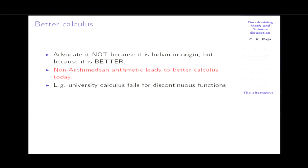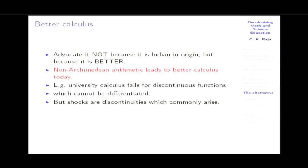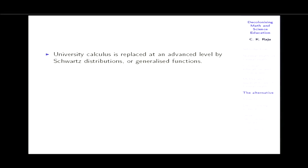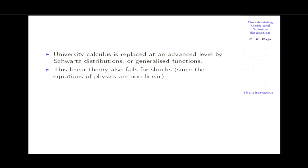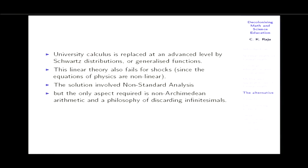Non-Archimedean arithmetic leads to better calculus today. University calculus fails for discontinuous functions, which cannot be differentiated, yet shocks and discontinuities arise in physics. You need to make sense of partial differential equations of physics in the presence of discontinuity. You can replace it by Schwartz distributions, but Schwartz theory is linear, and the equations are non-linear — so you have to multiply distributions, and Schwartz proved an impossibility theorem that this cannot be done. The solution is to use non-standard analysis, but the only aspect needed is the non-Archimedean arithmetic and the philosophy of discarding infinitesimals — which achieves better results at a higher level as well.